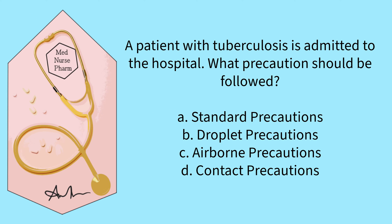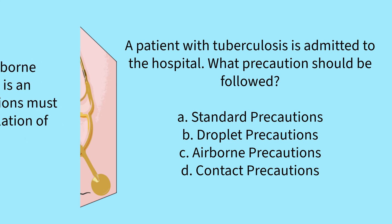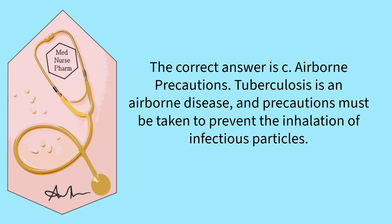A patient with tuberculosis is admitted to the hospital. What precautions should be followed? Standard precautions, droplet precautions, airborne precautions, or contact precautions? The correct answer is C, airborne precautions. Tuberculosis is an airborne disease and precautions must be taken to prevent the inhalation of infectious particles.